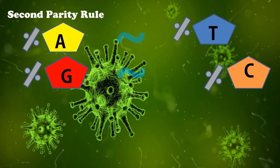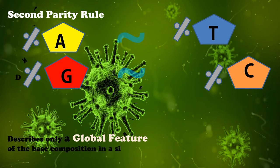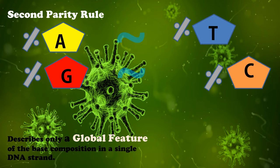The second parity rule describes only a global feature of the base composition in single-stranded DNA. In single-stranded DNA, the percentage of A, T, G, and C may not be identical but may be comparable to each other. Research supporting the second parity rule notes that the composition of DNA varies from one species to another, particularly in the relative amounts of A, G, T, and C bases. This evidence of molecular diversity made DNA a more credible candidate for genetic material than protein.